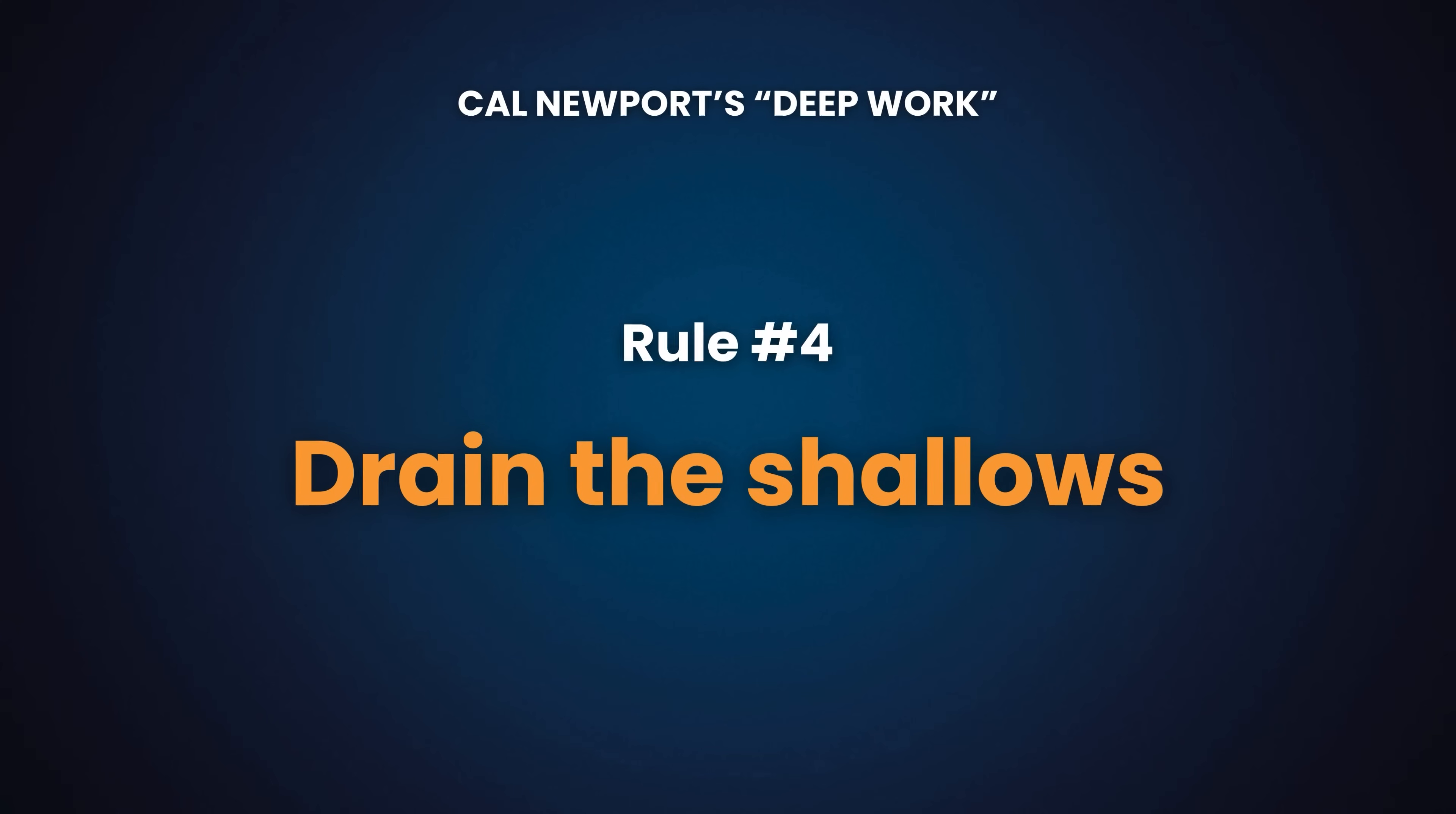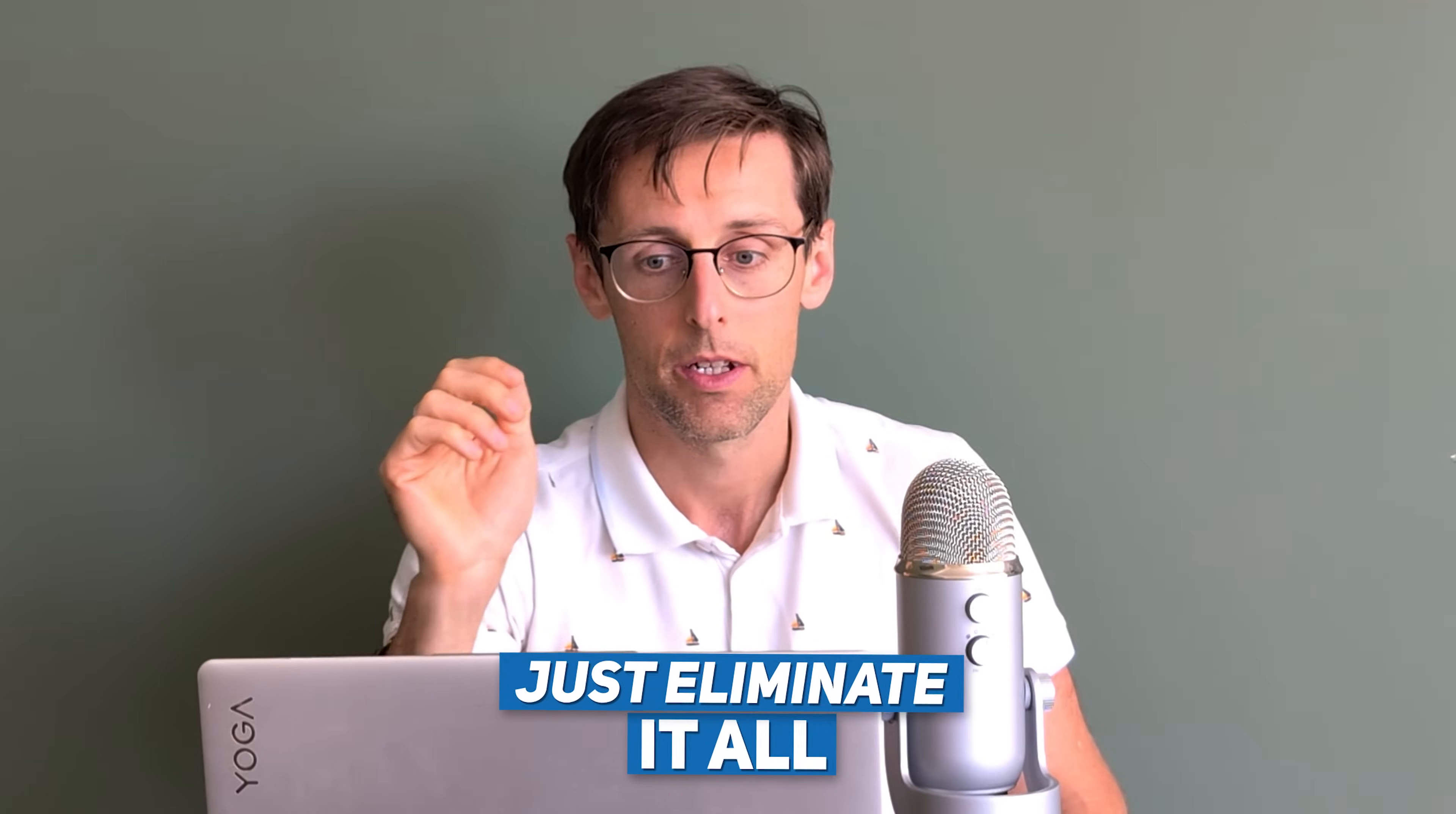Rule number four of deep work is to drain the shallows. You might remember that shallow work refers to work usually done on autopilot, in the state of distraction and is non-cognitively demanding and adds little value, i.e. answering emails. What you need to do is ruthlessly eliminate, minimize or delegate, automate such shallow work. The first strategy is by far the best. Just eliminate it all. If it doesn't add value, if it can be done in a state of distraction almost on autopilot, why would you do it at all? While your brain might tell you that you cannot eliminate a lot of tasks because maybe your boss or your colleagues will get mad at you and you'll miss out on a lot of really good research opportunities, I'd encourage you to really open yourself up to the possibility that you can truly eliminate most of the shallow work that you're currently carrying out.